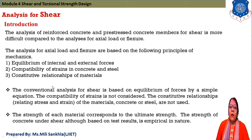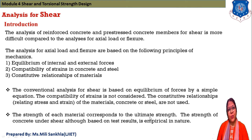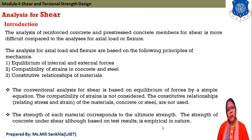The conventional analysis for shear is based only on equilibrium of forces by simple equation. Compatibility of strain is not considered, and the constitutive relationship between material — that is, stress and strain of concrete and steel — is also not used. Only one relation is used: equilibrium of internal and external forces. The strength of concrete under shear is empirical, based on test results, corresponding to ultimate strength.